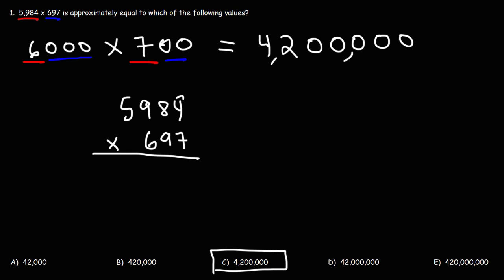So, we have 4 times 7, which is 28. Carry over the 2. 7 times 8 is 56. Plus 2, that's 58. Carry the 5. 7 times 9 is 63. Plus 5, that's 68. Carry the 6. 7 times 5 is 35. Plus 6, that's 41. Now, we need to add a 0 as we move to the next number. Next, we have 9 times 4, which is 36. 9 times 8 is 72. Plus 3, that's 75. 9 times 9 is 81. Plus 7, that's 88. 9 times 5 is 45. Plus 8, that's 53.